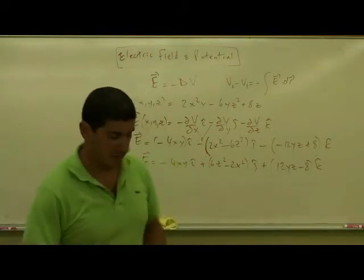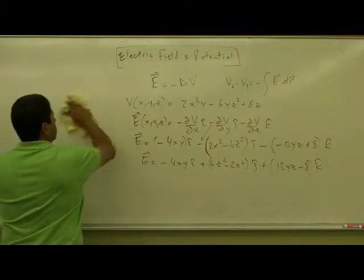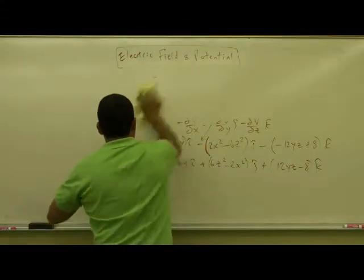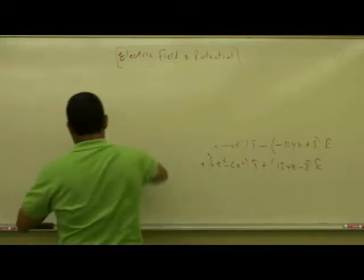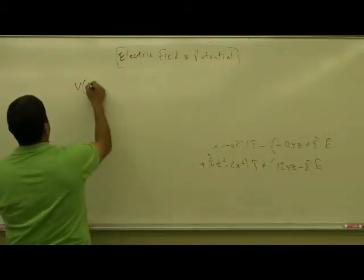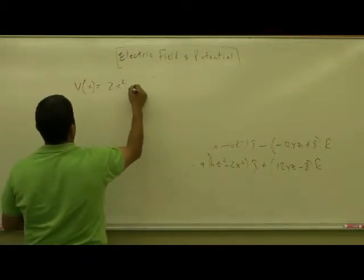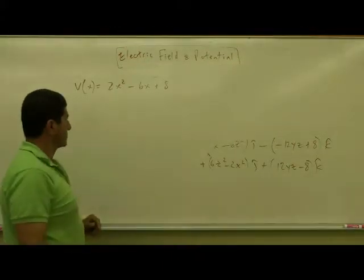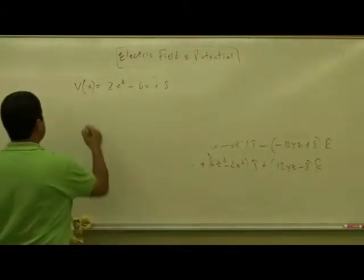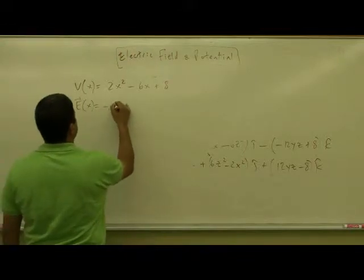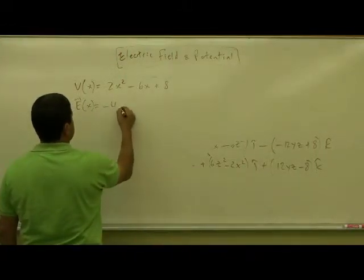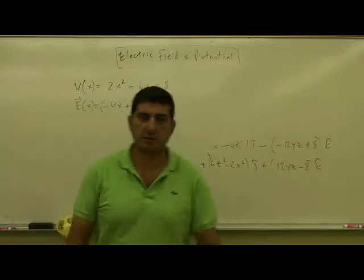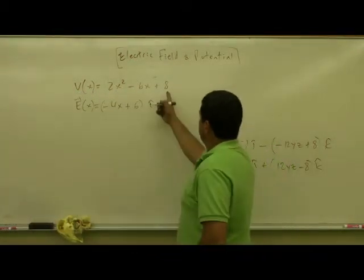What if it's a one-dimensional problem? For a 1D potential such as V = 2x² − 6x + 8, the electric field will be negative the derivative with respect to x, giving E = (−4x + 6) î. The derivative of the constant is zero.